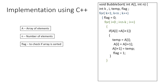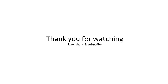Before closing the outer loop, we check if flag equals 0, which means no swap operation was performed and the array is already sorted. If flag is equal to 0, we break out of the loop; otherwise we repeat the process until we get a sorted array. So that was all for this video, thank you for watching.